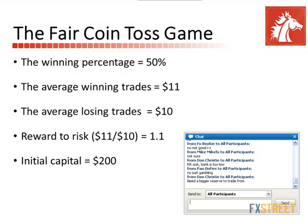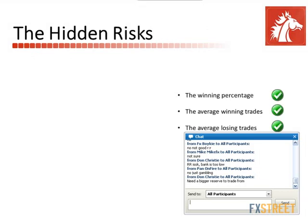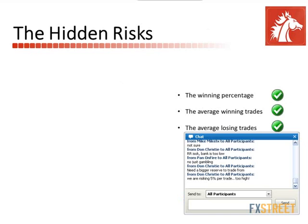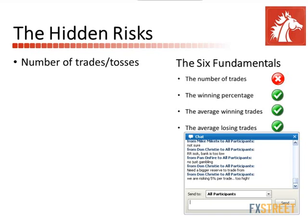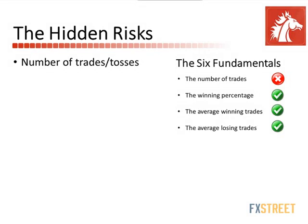Remember the six fundamentals of systematic trading — we're going to go back and check them. We know the winning percentage, the average winning trade, and the average losing trade. What is working against you is the number of trades. It's not about the risk-to-reward ratio; we're just talking about the fundamentals. You always go back and double-check against the six fundamentals, because if one of them doesn't work, the rest will fall apart — regardless if you're risking 5%, 2%, or even 1% per trade. If you don't look at these six fundamentals, you're going to end up wiping your account.